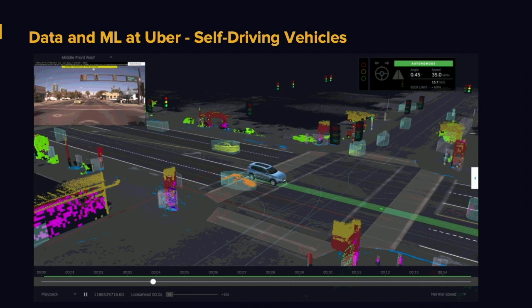Another very interesting use case is self-driving cars. Uber has a self-driving car unit where we are trying to make self-driving cars and the software for that. We need very large data and ML models to predict routes, signs, and pedestrians, and to visualize the whole path. This is a very big use case for data and ML platforms.